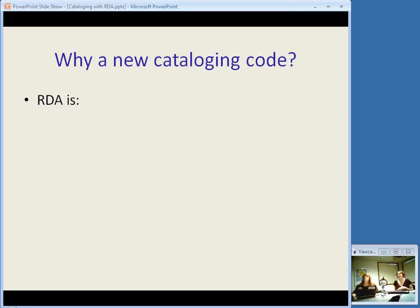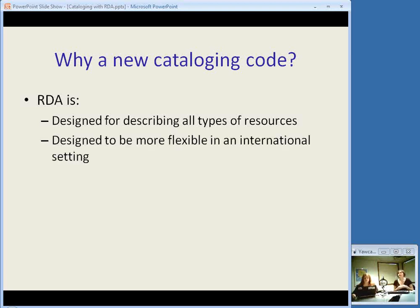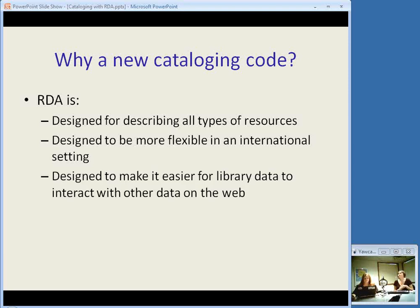A question that a lot of people ask about RDA is: why? Why do we need a new cataloging code instead of just updating AACR2? It's designed for describing all types of resources. AACR2 is pretty much originally made for text, for books, and so RDA is designed to be more flexible as far as the type of resources you work with. It's also designed to be more flexible in an international setting — it gives local agencies more choice on language and things like that so it can be used more easily internationally. And it's designed to make it easier for library data to interact with other data on the web.